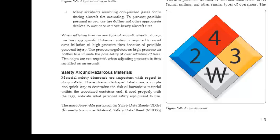Safety around hazardous materials. Material safety diamonds are important with regard to shop safety. These diamond-shaped labels are a simple and quick way to determine the risk of hazardous material within the associated container, and if used properly with the tags, indicate what personal safety equipment to use.